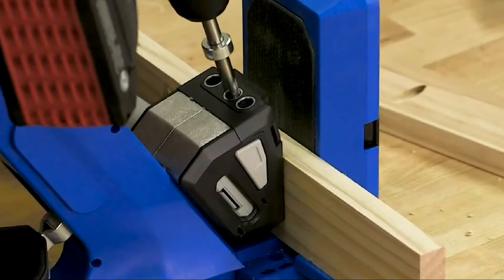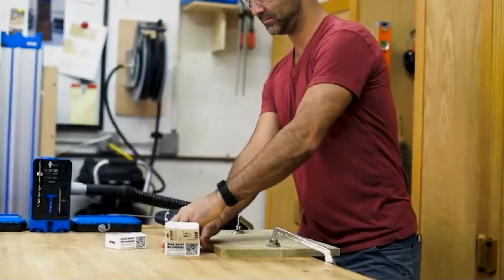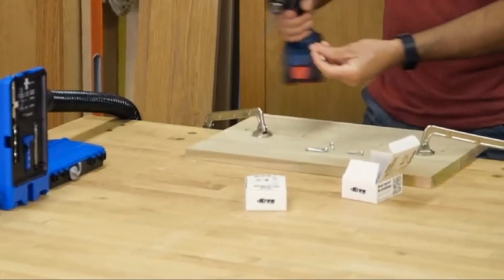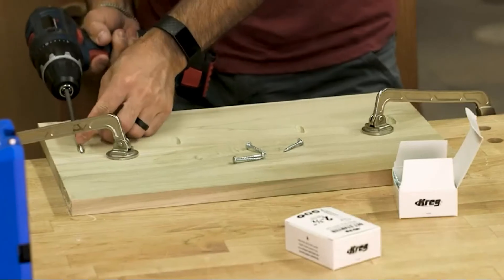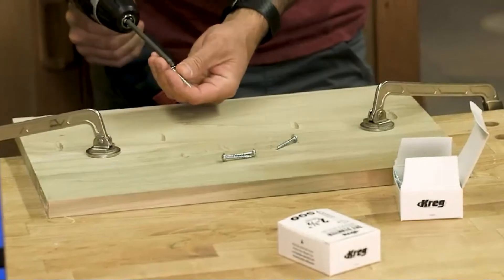The pocket hole jig 720 Pro makes it easy to get started too. Whether this is your first pocket hole jig or you've been building with Kreg for years, we've included packs of two of the most popular sizes of Kreg pocket hole screws—enough to build an entire project—and we've even thrown in a complete project plan.